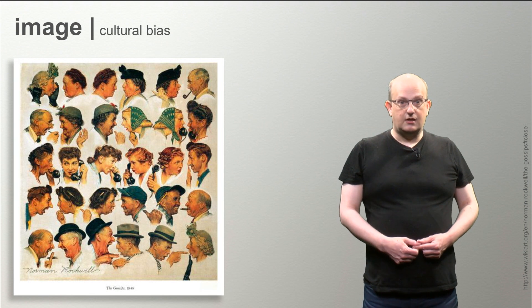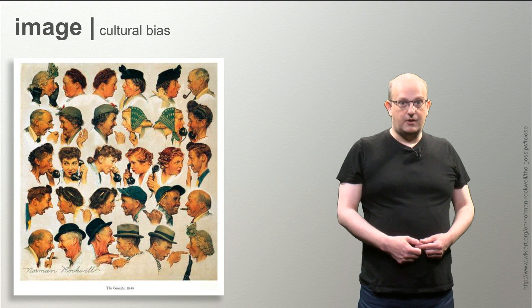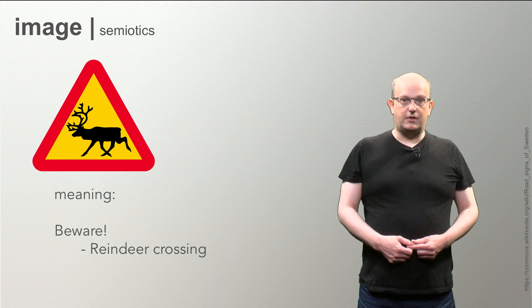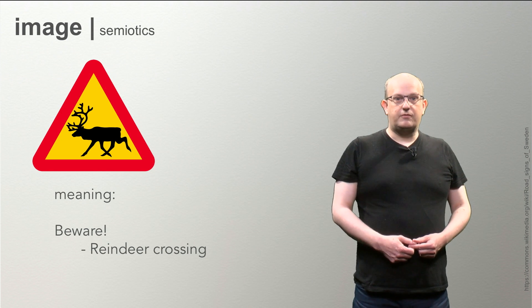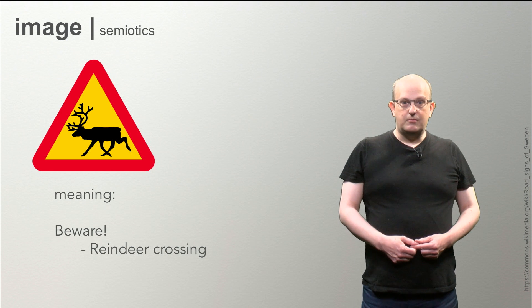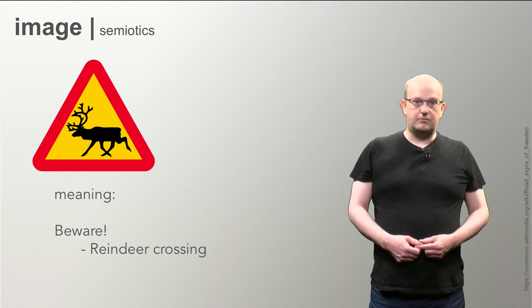Misunderstanding can easily happen. Semiotics is about meaning within an image. For example, the meaning of a road sign. Road signs need to be very clear, but other images can have a lot of different meanings.